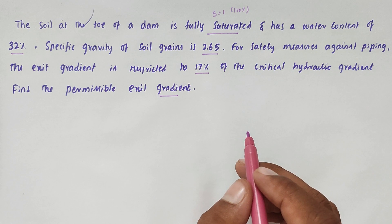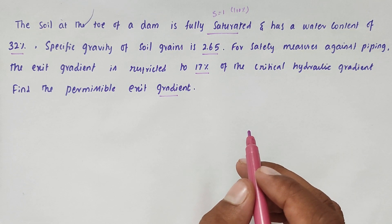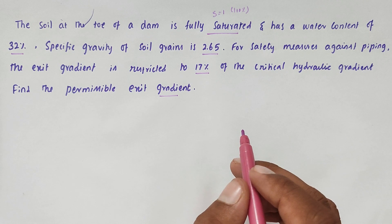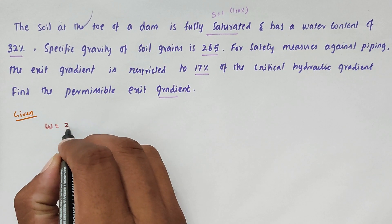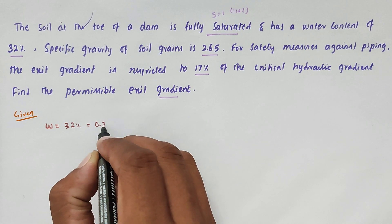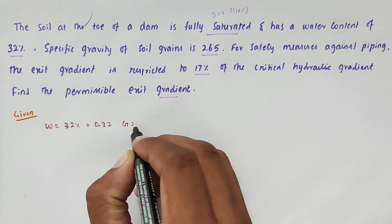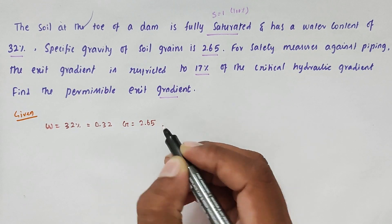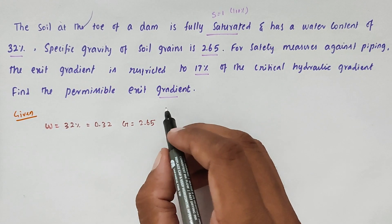We have to find out the permissible gradient, given that the exit gradient is restricted to 70% of the critical gradient. The water content W equals 32%, that is 0.32, and the specific gravity G equals 2.65. These are all the given values, and we have to find out the permissible gradient.